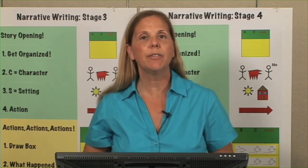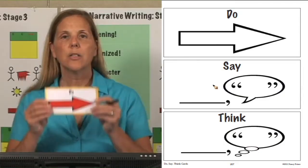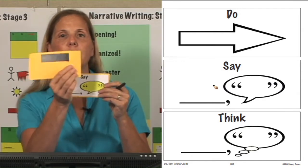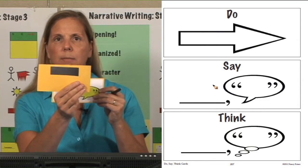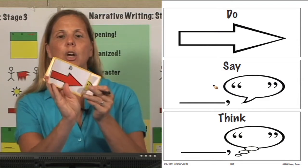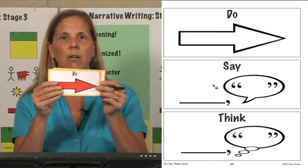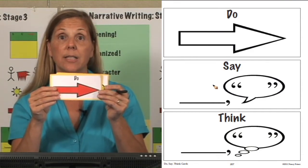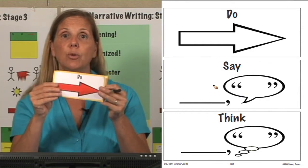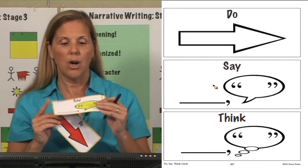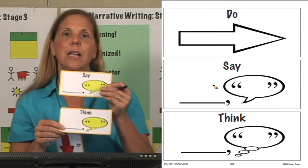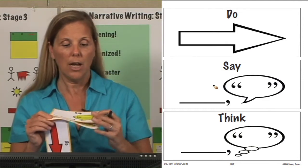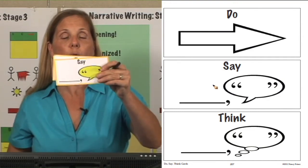On page 157 are the do, say, and think cards. I cut these cards out, mount them, and many times put a strip of magnet on the back. If I'm going to show the children these different cards, I like to put them up on my whiteboard right where my planner is. So they can see, are we going to do, are we going to say, or are we going to think? Then whichever way we choose to write that next action in the story, I'm going to keep that card there.